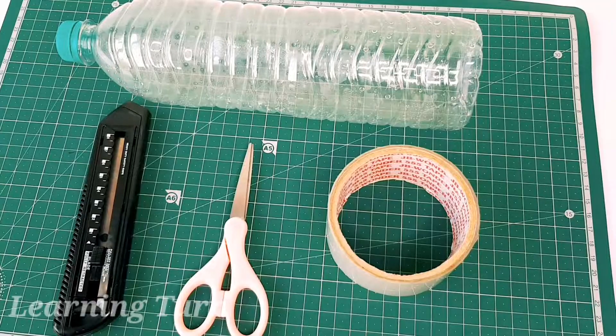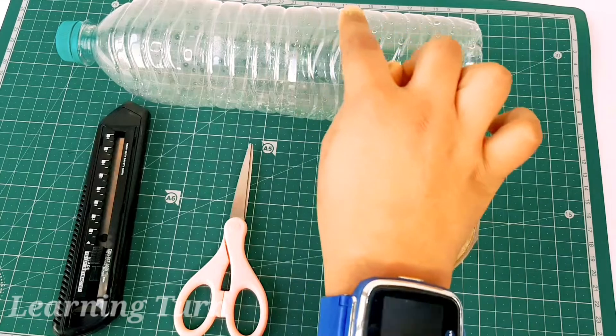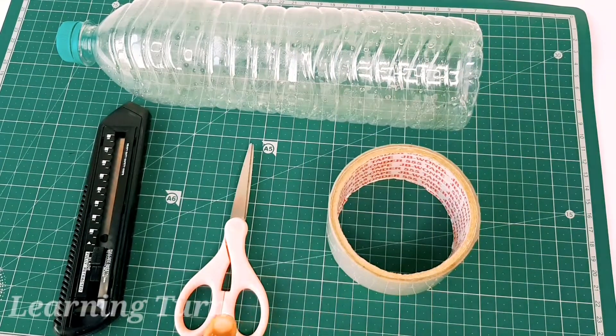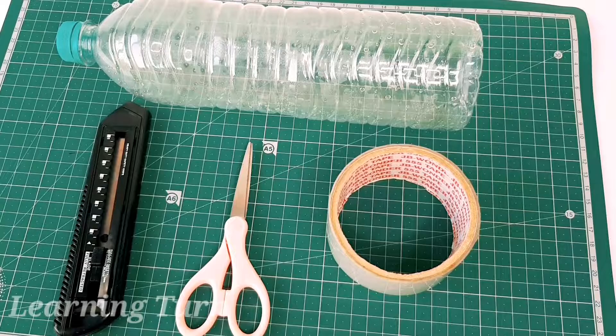Rain gauge model 1. For this activity you will need a plastic bottle, tape, a pair of scissors, and a paper cutter. So let's start.